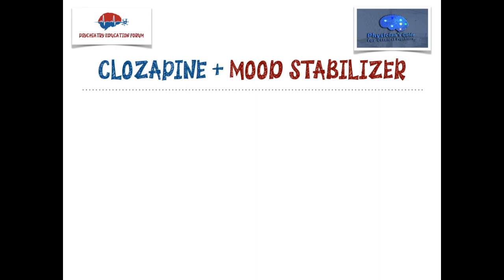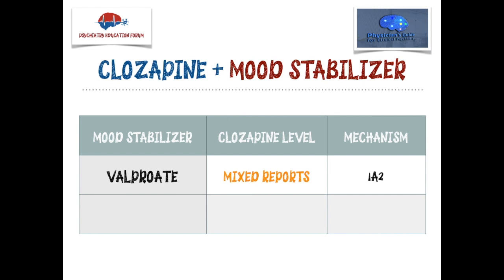The second section is interactions with mood stabilizers. For valproate (Depakote), I found mixed reports — some cases showed an increase in clozapine levels and some showed a reduction. This is because of two possible mechanisms: first, through 1A2 inhibition, and second, through protein binding displacement. So with valproate, you should be cautious — it can go either way.